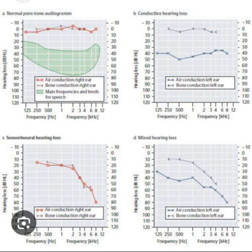When there is an asymmetry of 20 dB or greater in two consecutive frequencies, or 15 dB or greater in any two frequencies between 2000 and 8000 Hz — particularly when accompanied by unilateral tinnitus — MRI of the cerebellopontine angle should be obtained to rule out the presence of a vestibular schwannoma.